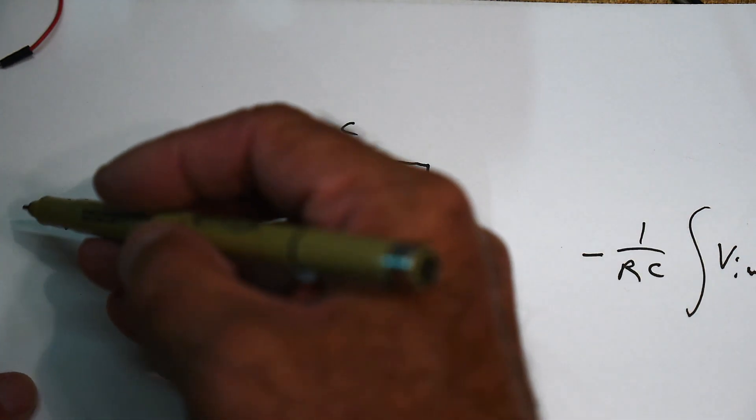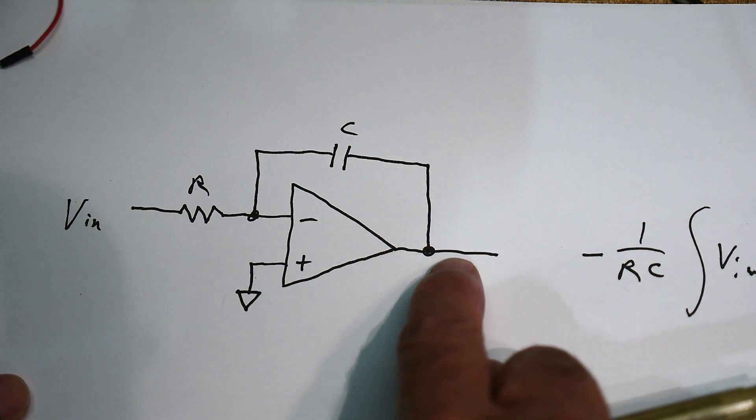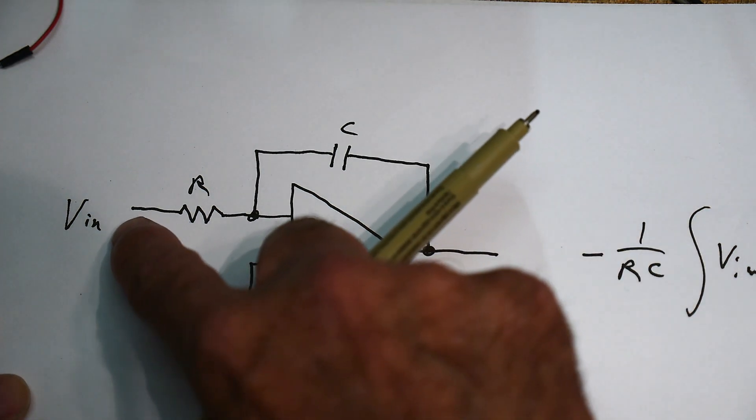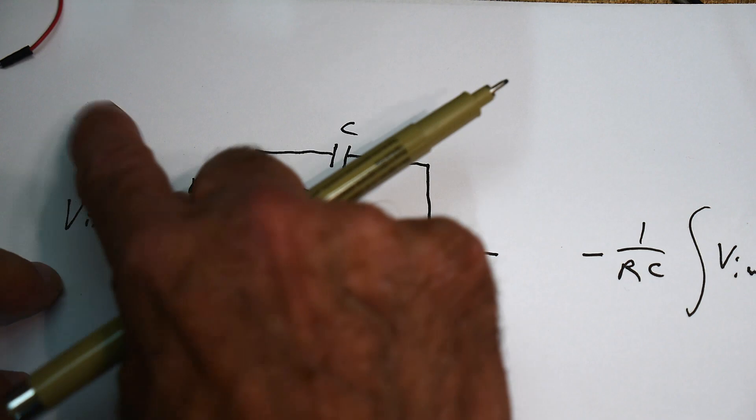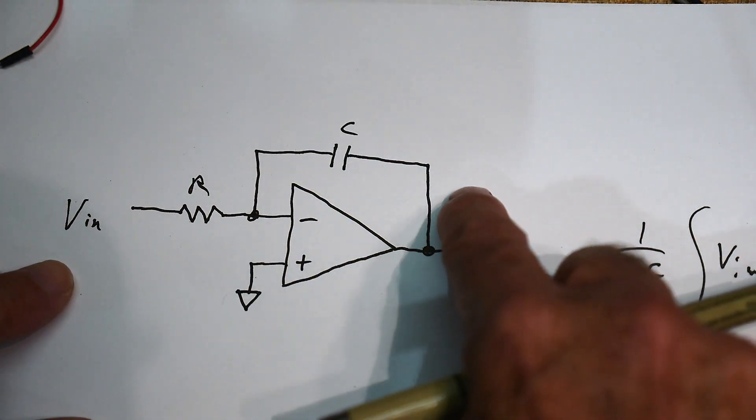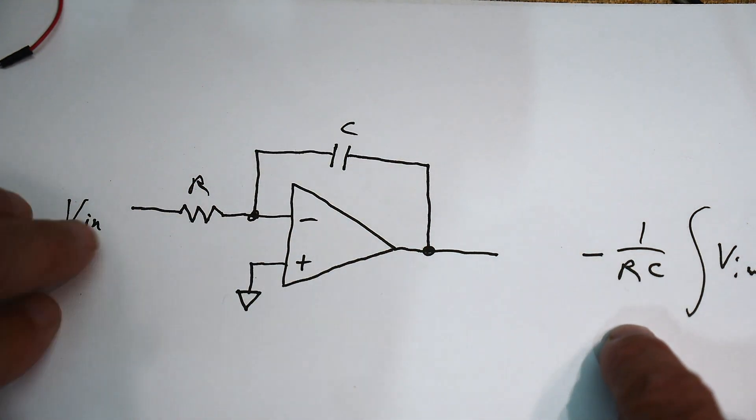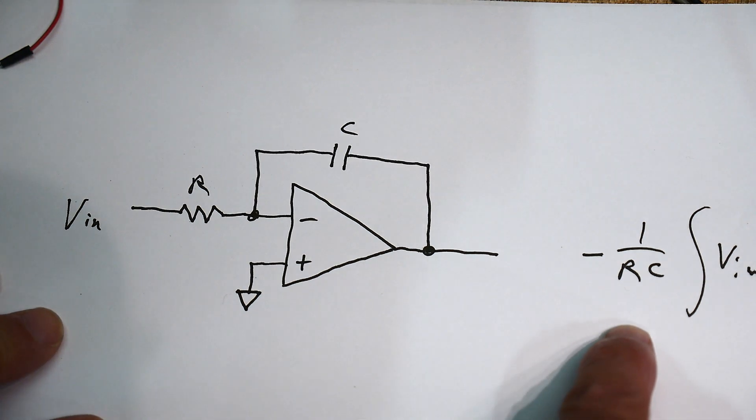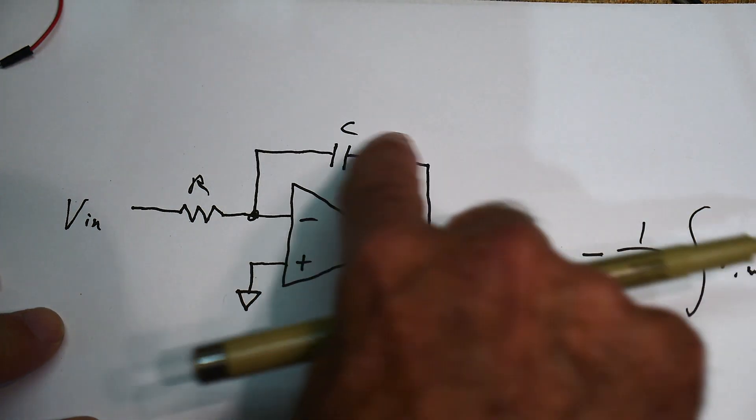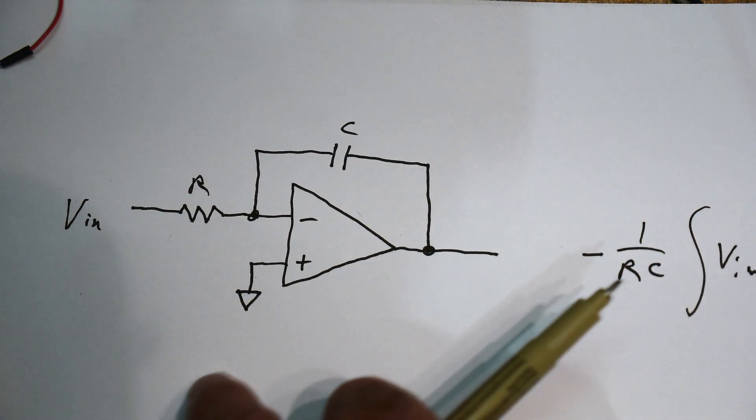In practicality, if you put a square wave in here, you'll get a sawtooth wave out. When the polarity changes, so if it goes positive, you put plus 1 volt here, it'll start to integrate downwards. And if you change it to minus 1 volt, it'll start to go up the other direction. So you can say, oh, you can just use this to make a sawtooth.